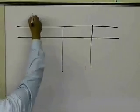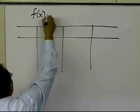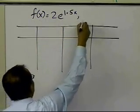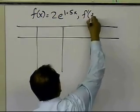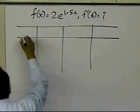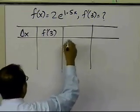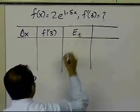So if I write down, this is the function f of x equal to 2 to the power 1.5x. I'm calculating my derivative of the function at 3, so I've got delta x here, f prime of 3 here, and my true error here.